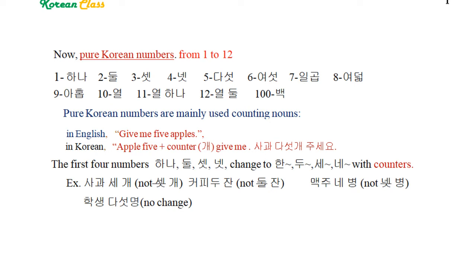For example: 사과 세 개 (three apples), 커피 두 잔 (two cups of coffee), 맥주 네 병 (four bottles of beer), 학생 다섯 명 (five students). From five (다섯) onward, there is no change. Again: three apples 사과 세 개, two cups of coffee 커피 두 잔, four bottles of beer 맥주 네 병, five students 학생 다섯 명.